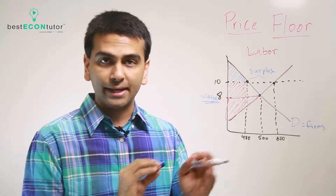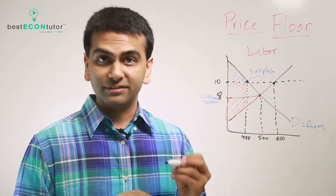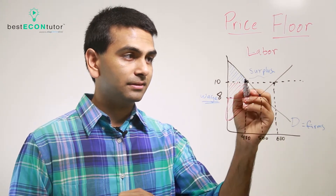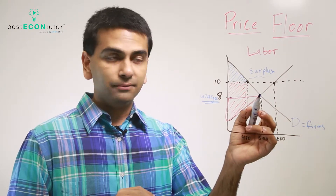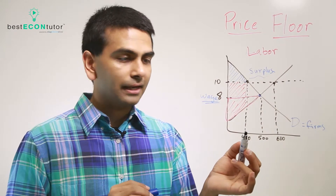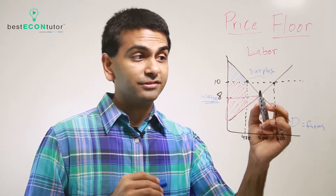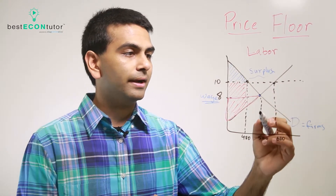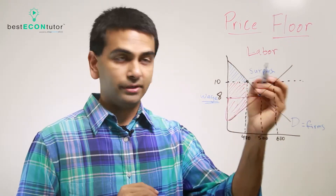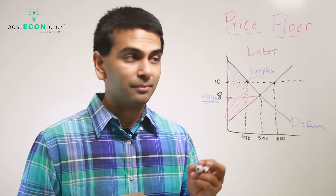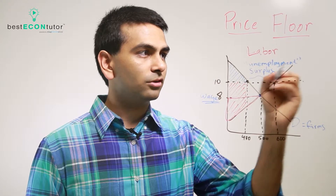Minimum wage is essentially a price floor on the labor market. If minimum wage is set at $10 when the free market equilibrium is $8, businesses will demand fewer workers — if you used to pay $8/hour and hired 500 workers, at $10/hour you'll hire fewer. But workers will want to supply more labor at the higher wage. This creates a surplus of workers — people who want jobs but can't find them — and in the labor market, that surplus has a specialized name: unemployment.